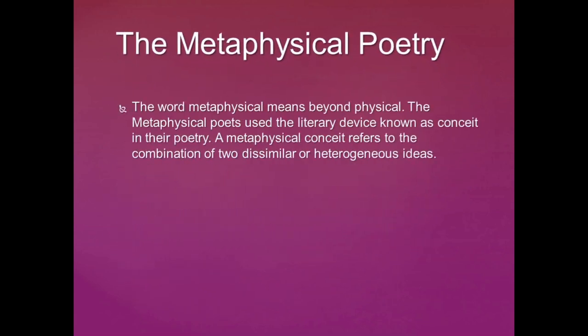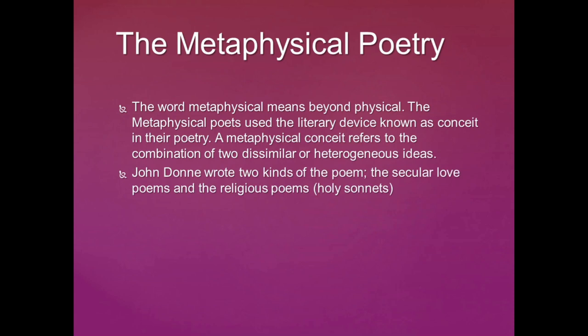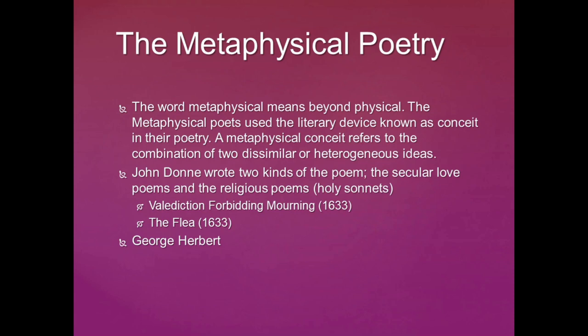This is followed by the metaphysical poetry of the 17th century. The word 'metaphysical' means beyond the physical element. The metaphysical poets use the literary device known as the conceit — a metaphysical conceit refers to the combination of two dissimilar or heterogeneous ideas. John Donne is the representative metaphysical poet, who wrote two kinds of poems: the secular love poems and the holy sonnets. A Valediction Forbidding Mourning and The Flea are the most important poems written by John Donne.